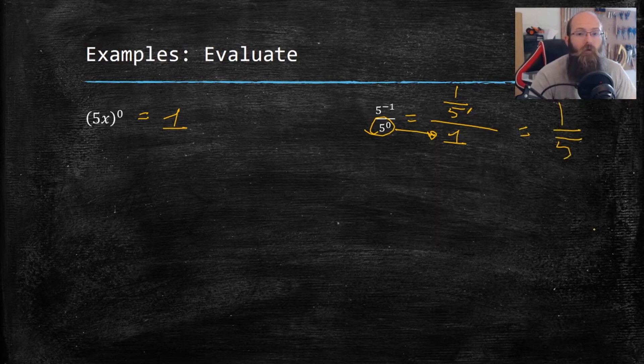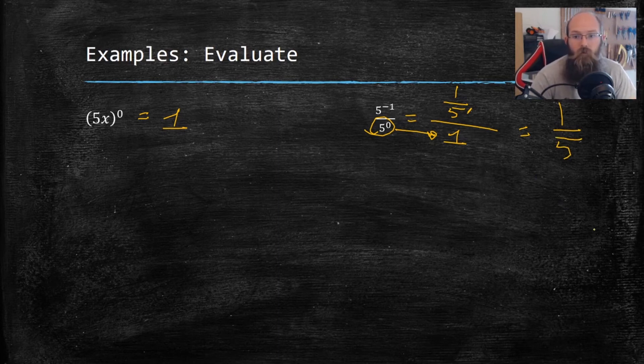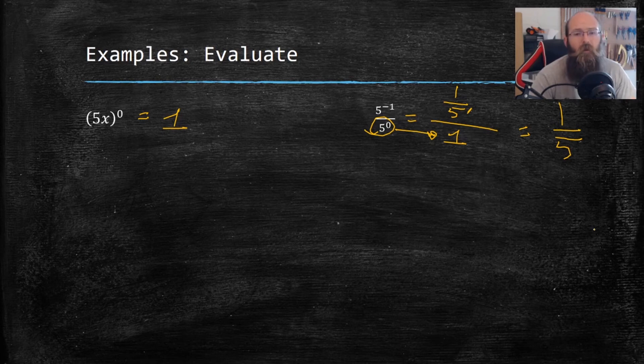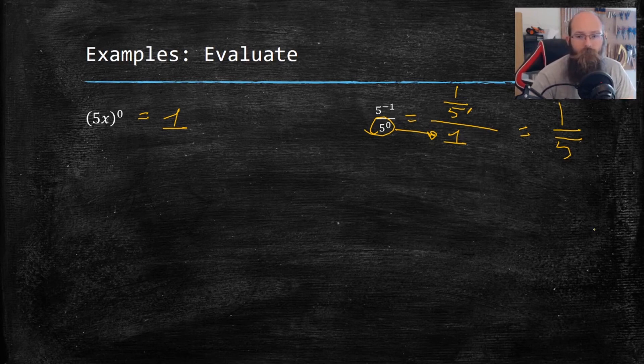If your teacher allows you to use calculators, you can do one over five divided by one, enter, and if it gives you a decimal, then you hit math button on your calculator and then enter, enter, and it should give you it as a fraction. But this also wasn't too scary, right? If I'm dividing anything by one, it just stays the same.